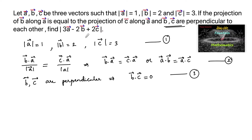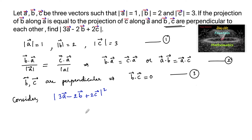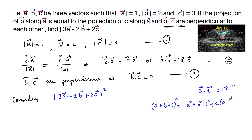Now we need to find mod of (3A - 2B + 2C). Consider mod(3A - 2B + 2C) squared. Since A·A = mod A squared, we use the formula (A + B + C)² = A² + B² + C² + 2(A·B) + 2(B·C) + 2(C·A) for vectors.